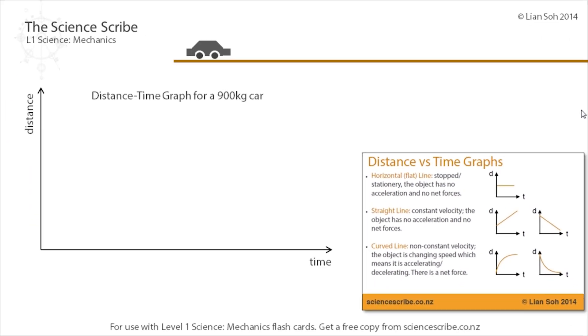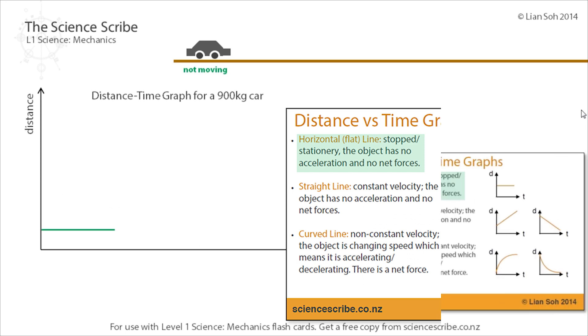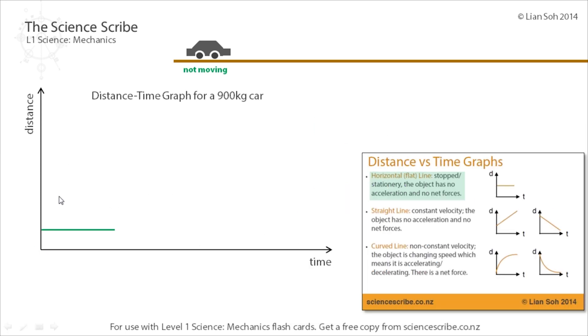Now let's say I want to track the motion of a vehicle, a 900 kilogram car, using a distance-time graph. If I have a horizontal flat line, that tells me that the car isn't moving because its distance isn't increasing and isn't decreasing. It's staying the same.